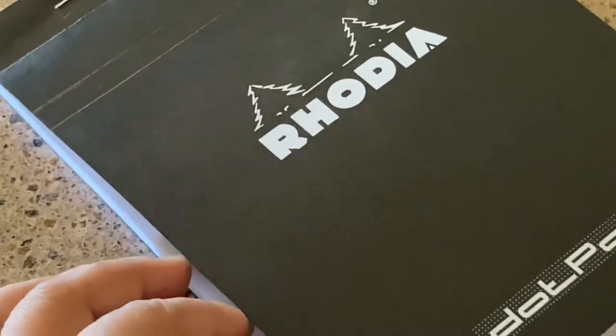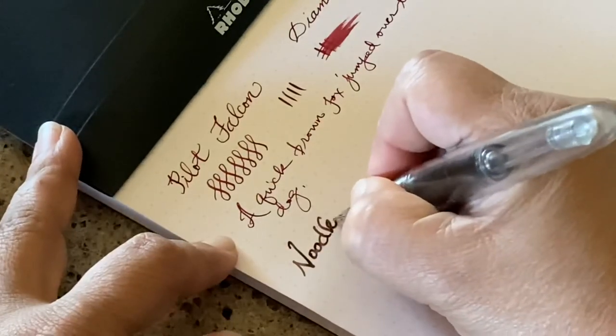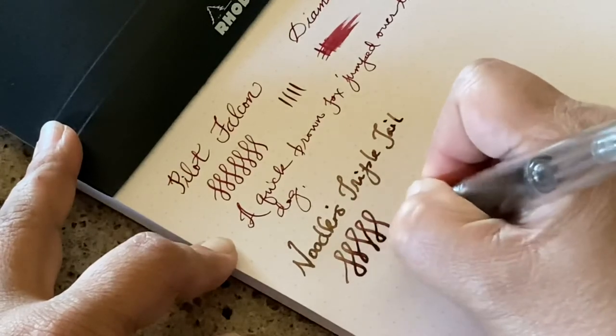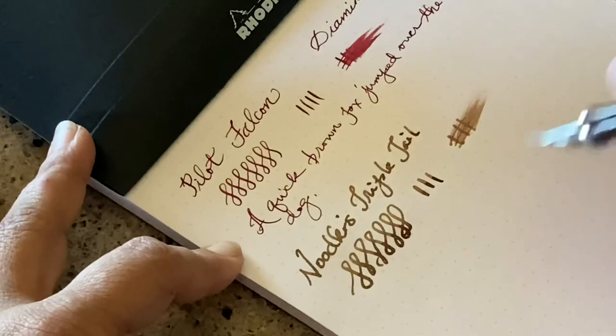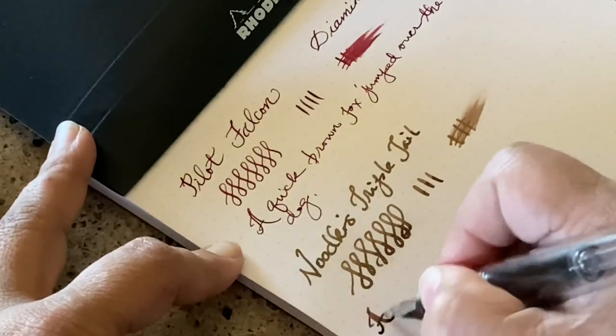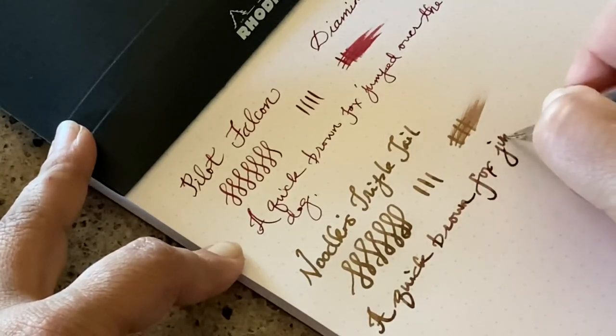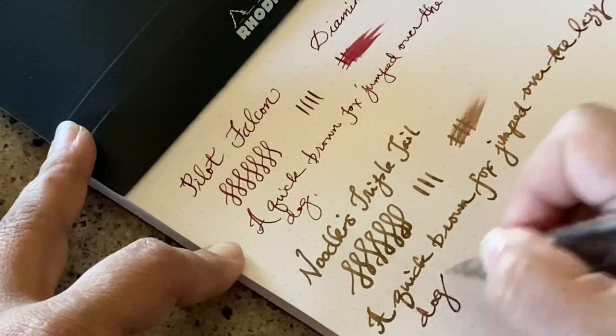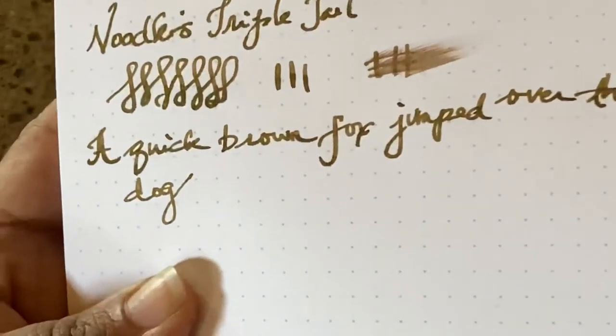All right. Now I'm going to try it on better paper. This is my Rhodia dot pattern. I'm going to just do a little sample here. Okay. So there's more smear on the nice pad versus the other one. And then, the quick brown fox, my writing sample here. Okay. And there's this part here that you can see. Nothing coming through on the nicer paper. But the smeary part is there. But it's dried already.